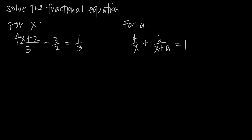In this video, we're talking about how to solve fractional equations and abstract fractional equations. In this first example, we've been asked to solve for x and we have the equation 4x plus 2 over 5 minus 3 halves equals 1 third. Notice that we just have a single variable x here. We start getting into abstract fractional equations when we have more than one variable involved, as we do over here where we have both x and a involved.